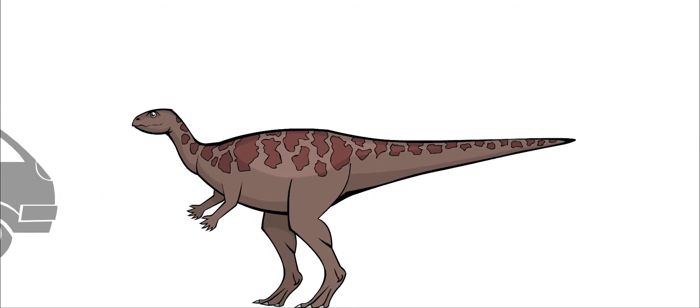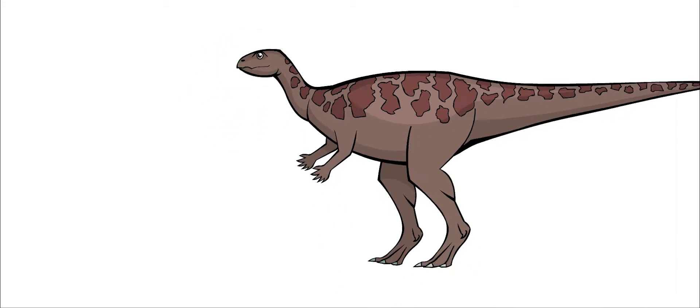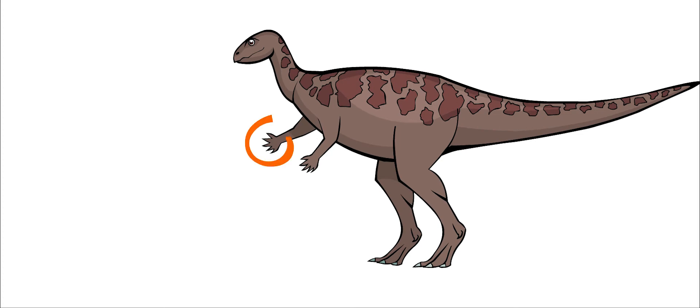It had large eyes and long, thin legs with three toes on each foot. Its arms were much shorter, with five long fingers on each hand.